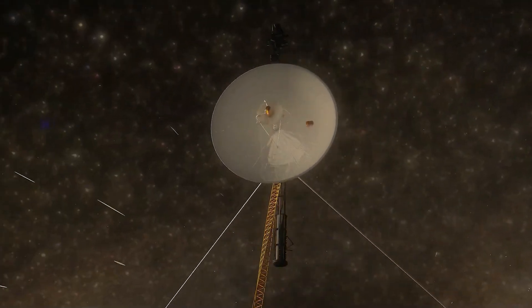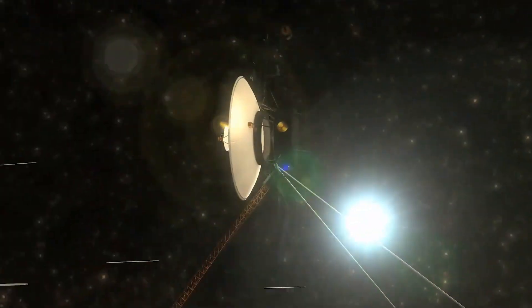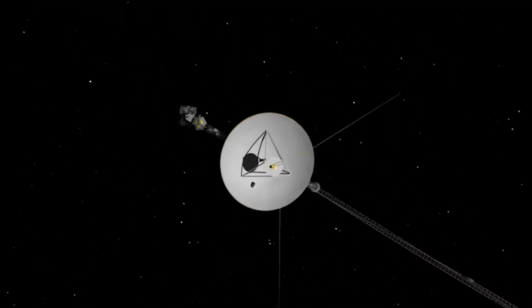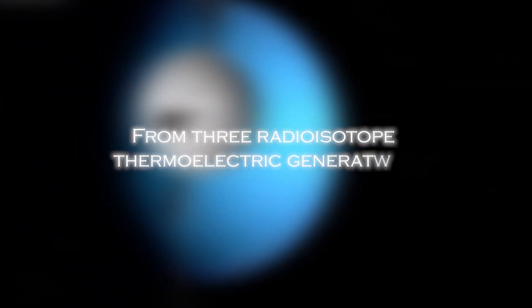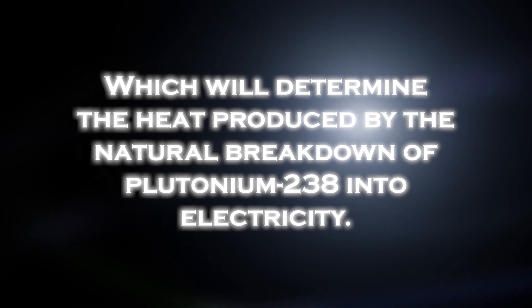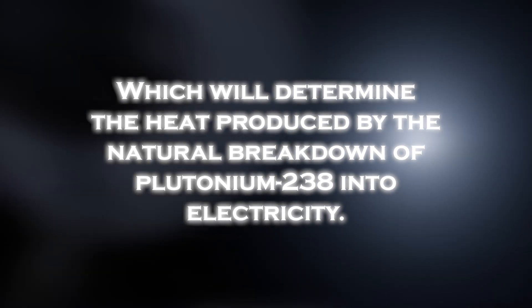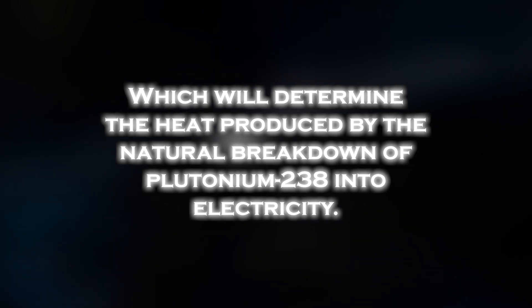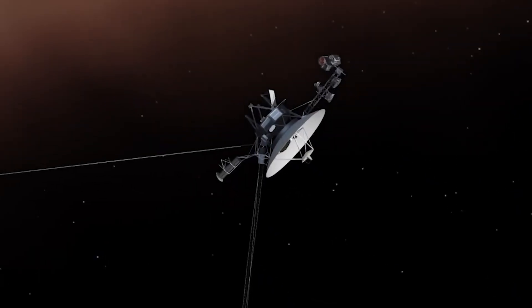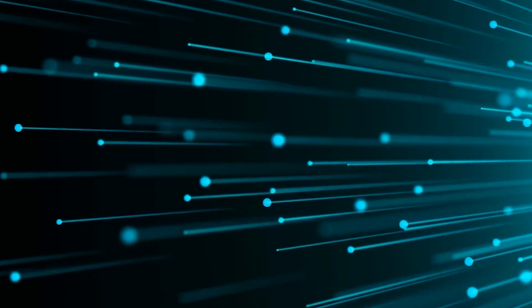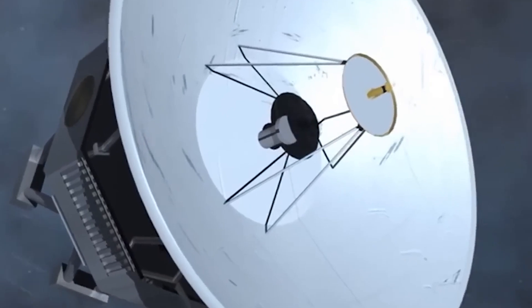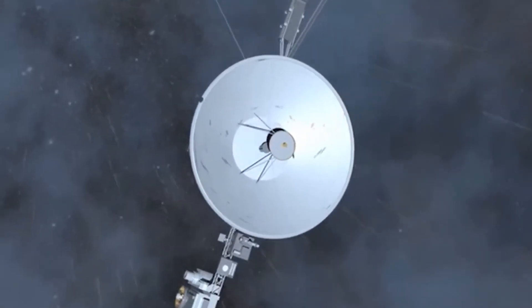However, this milestone was not easy to achieve. As the probe moved farther from the sun, the amount of sunlight available to power its instruments significantly decreased. The spacecraft's power is generated primarily from three radioisotope thermoelectric generators, which convert the heat produced by the natural breakdown of plutonium-238 into electricity. As the heat output has decreased over time, the available power has decreased, affecting the operation of several onboard systems, including scientific instruments, data transmission, and communications.